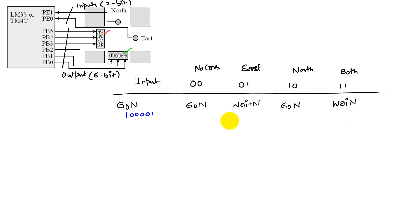In doing this, we've already created another state: wait north. The wait north state says I am going to yield so that the east traffic gets a chance. The output for wait north has to be 1, 0, 0, 0, 1, 0, which corresponds to the yellow light on in the north direction.